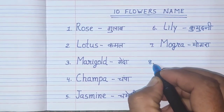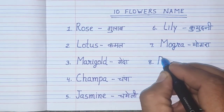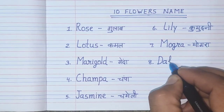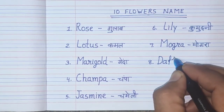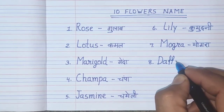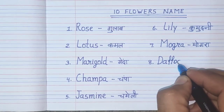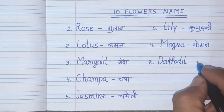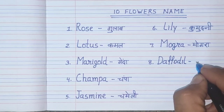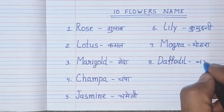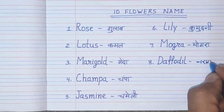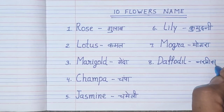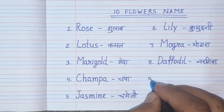Number 8. D-A-F-O-D-I-L. Daffodil. Daffodil means Nargis.